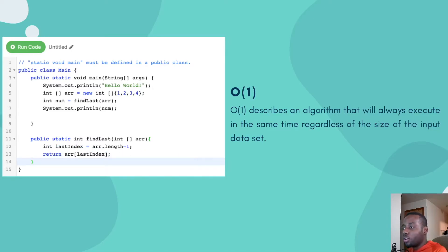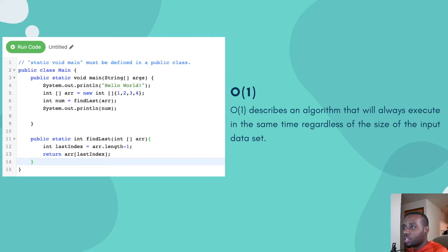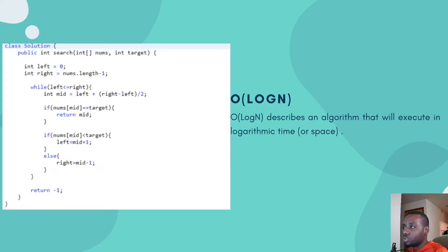If I were to show you guys a graph, you'd see the different runtimes and how they look, and you can see their performance when you compare them with each other. Constant time — the number of operations is the same regardless of the input size. That's the key takeaway for this one.